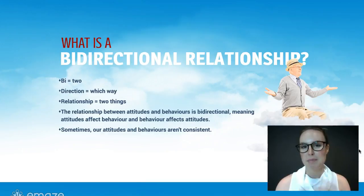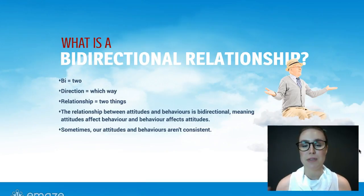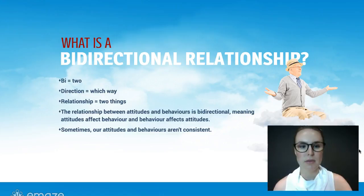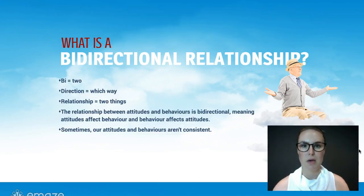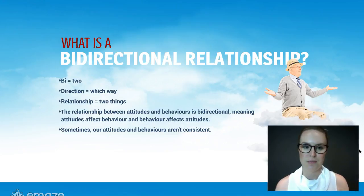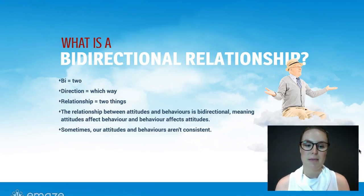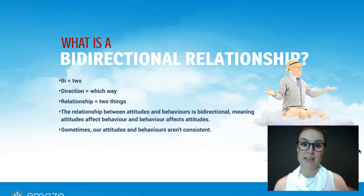So what is a bi-directional relationship? Bi is a prefix for two — think of bicycle or bisexual. So it's two. The direction is which way, and a relationship is something held between two things, objects, people, etc. So when we say there's a bi-directional relationship, we're talking about a relationship where each affects the other.